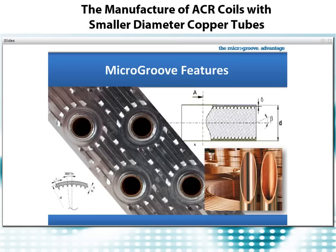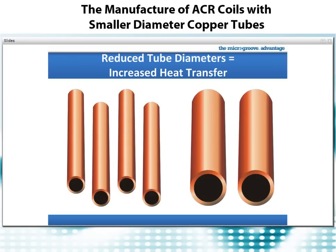When we combine the increased efficiency of internal enhancements with smaller tube diameters, one of the first things we notice is that it takes several smaller diameter tubes to equal the surface area of a larger diameter tube. But this is actually not a disadvantage — we have important benefits here. A big one is an increase in the surface area to volume ratio, equating to more heat transfer. With this increase in heat transfer, we don't need to match the volume of the larger tube to get the same amount of cooling. Using smaller diameter tubes, we can match the cooling of the larger tube with less volume, and that also means less refrigerant.